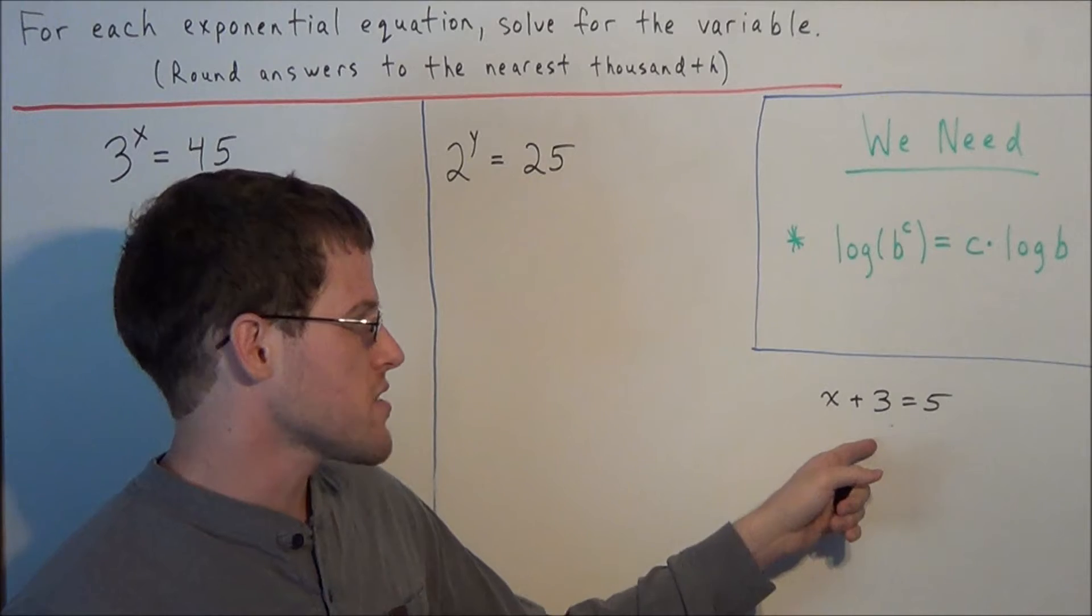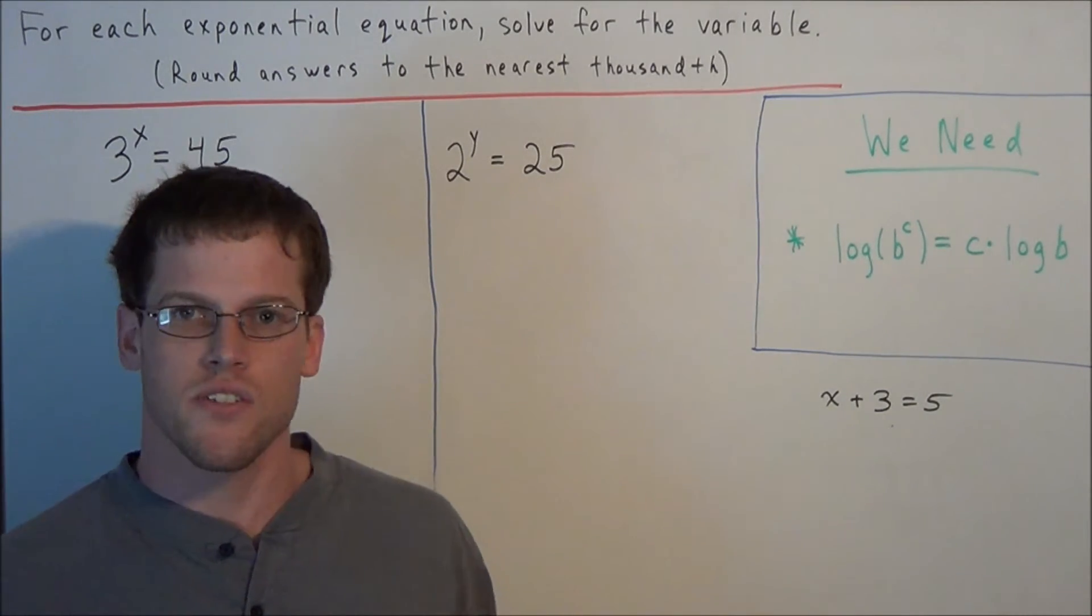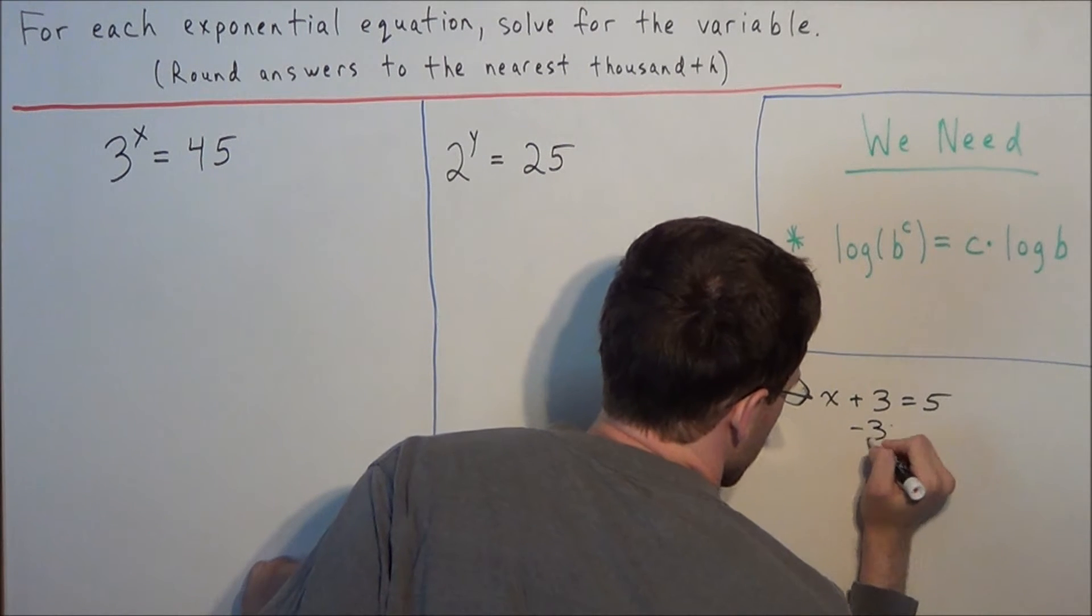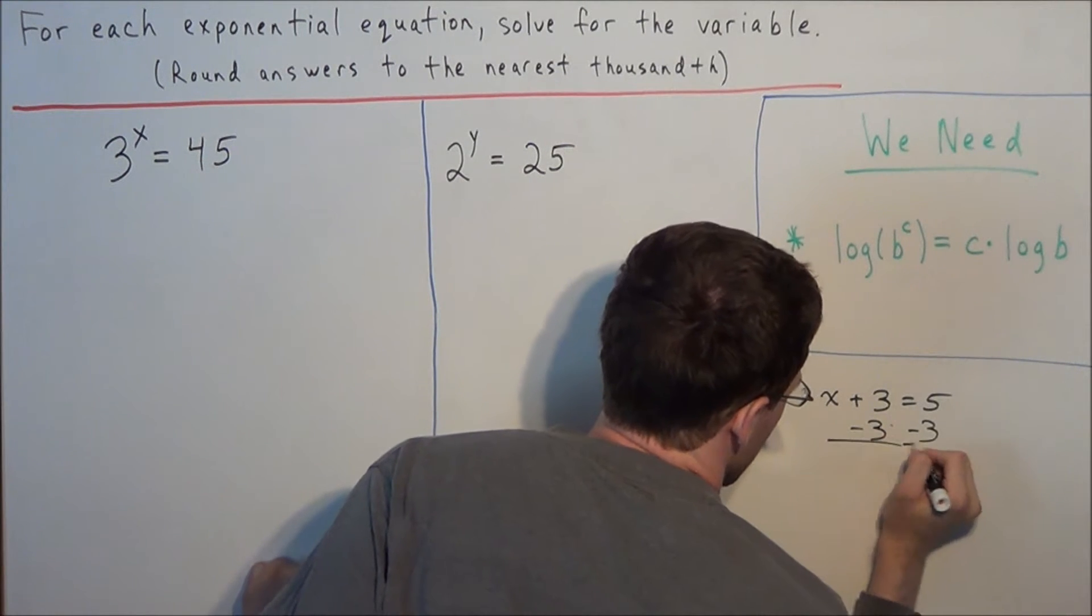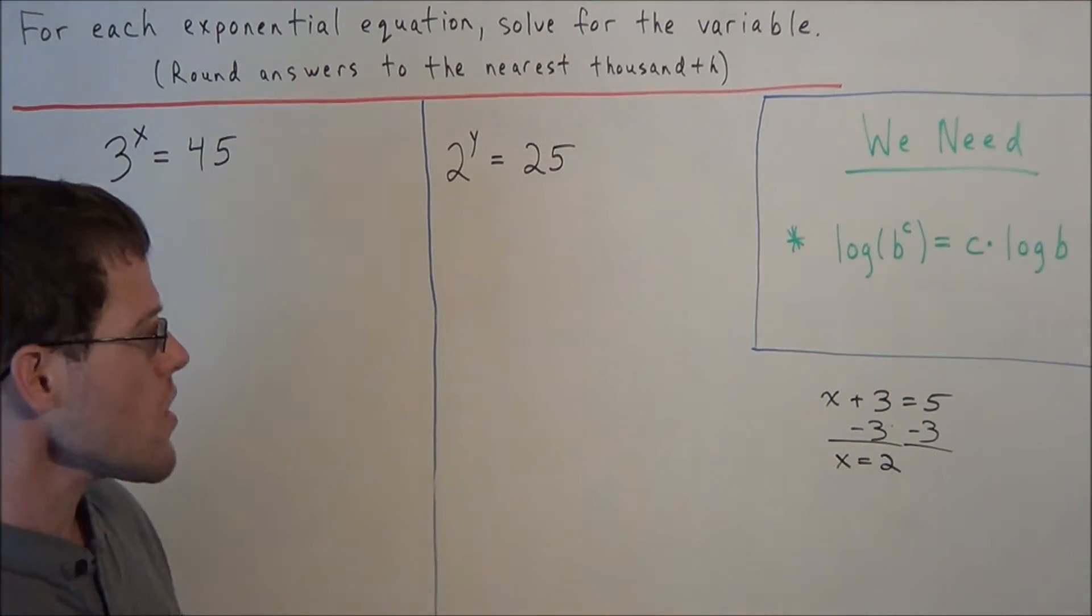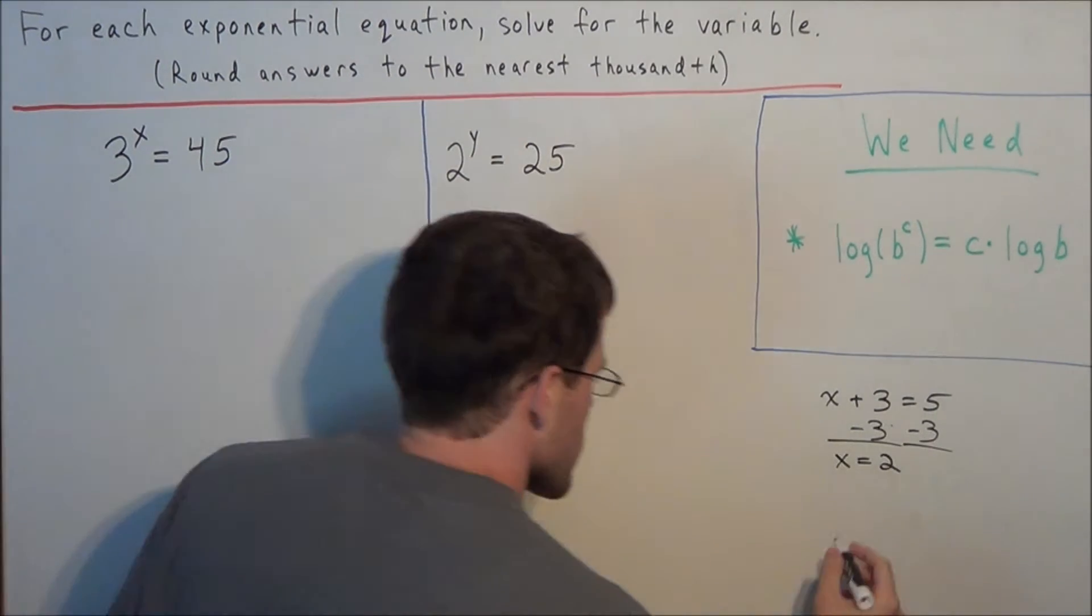Right now, what's attached to x? 3 is attached to x by addition. So we're going to do the inverse of addition to solve for x, and the inverse of addition is subtraction. So we would subtract 3 from both sides to find that x equals 2. So now, as it turns out, logarithms are the inverse operation of exponents.